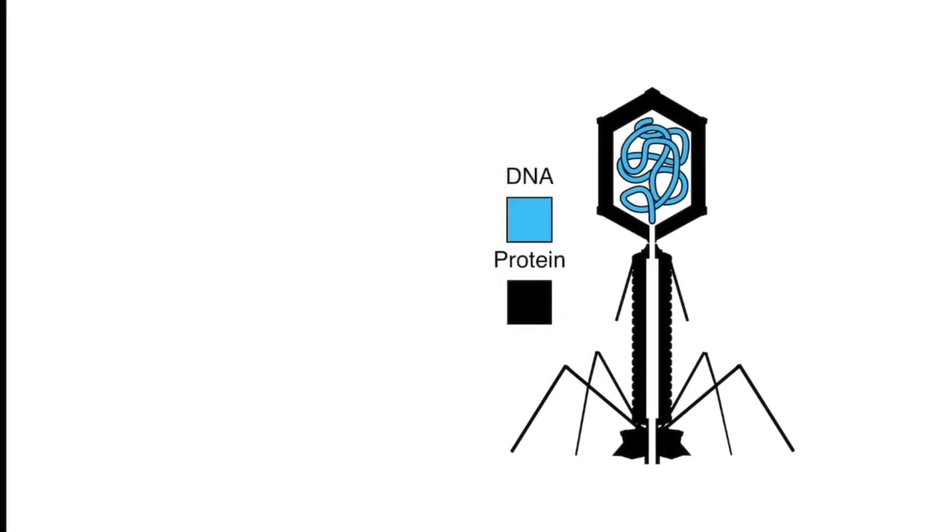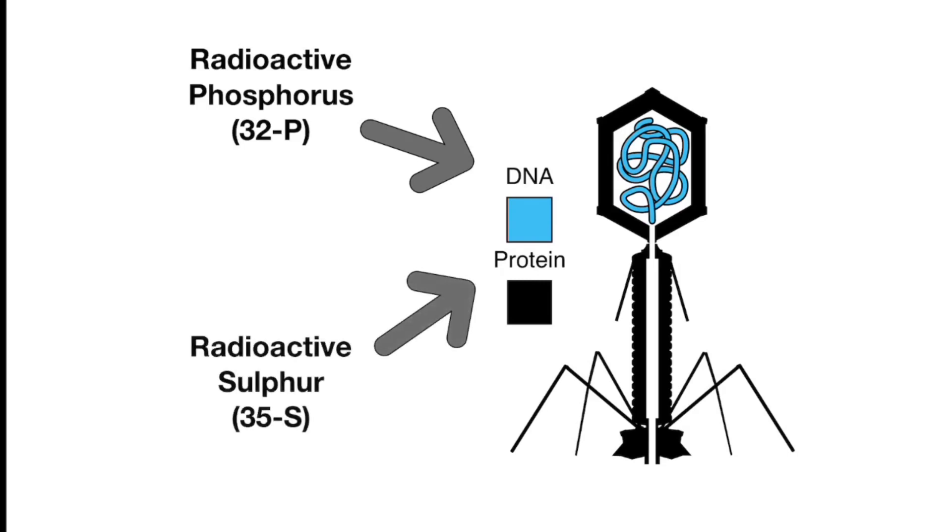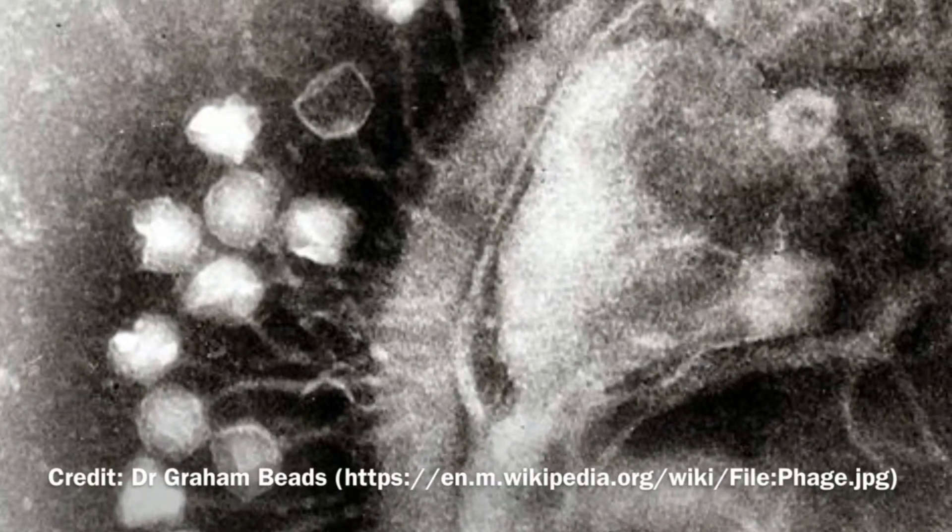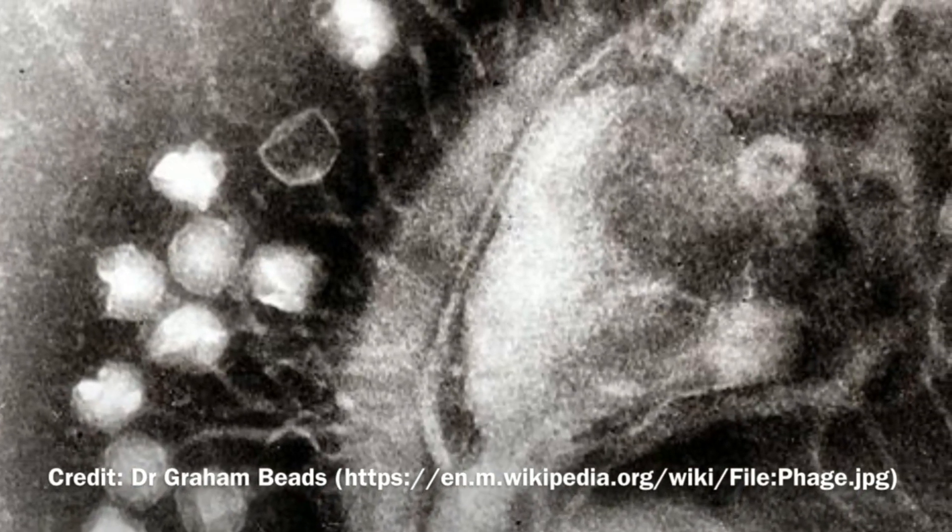To determine this they need to be able to identify the DNA and identify the protein from the virus. In order to do that they tagged the DNA in the virus with radioactive phosphorus or 32P and they tagged the protein coat of the virus with radioactive sulfur or 35S. The radioactive labeled viruses were then allowed to infect the bacteria.